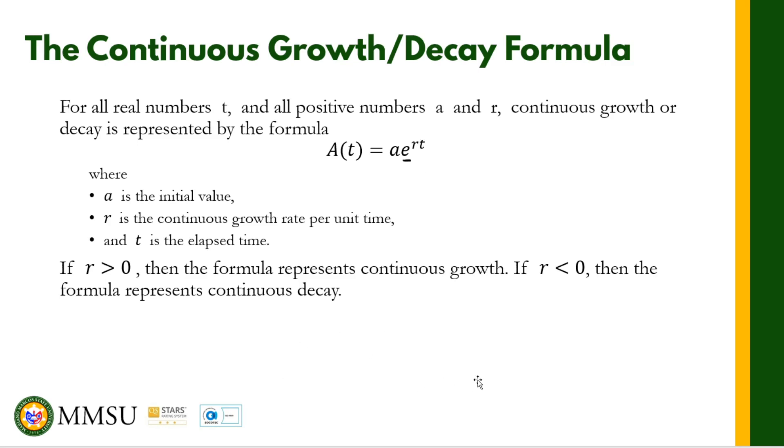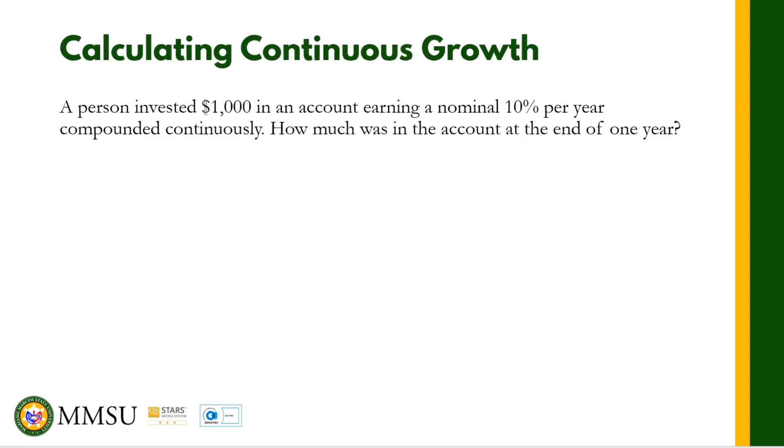Let us take a look at the following examples. A person invested $1,000 in an account earning a nominal 10% per year compounded continuously. How much was in the account at the end of one year? This is a continuously compounding interest, so we are going to use the formula A = ae^(rt).